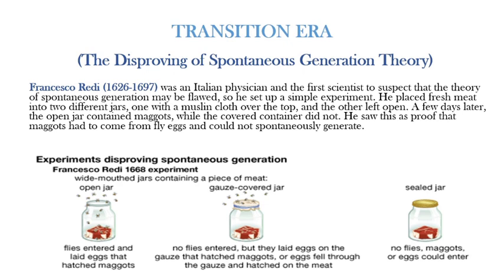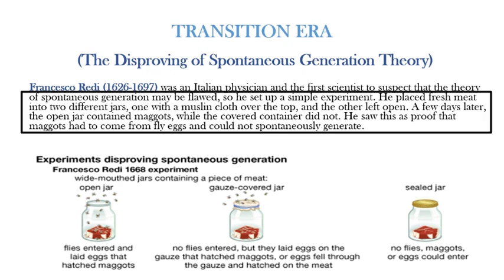Among those scientists, Francisco Redi was the first Italian physician who suspected that the theory of spontaneous generation may be flawed, and he set up a simple experiment to prove it. He placed fresh meat into two different jars — one covered with muslin cloth and the other left open. After a few days, the open jar contained maggots while the covered container had none. He proved that maggots had to come from fly eggs, and that spontaneous generation was not proved.